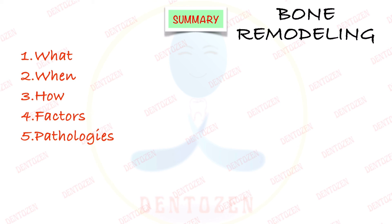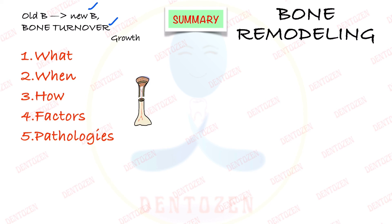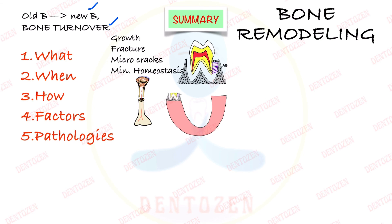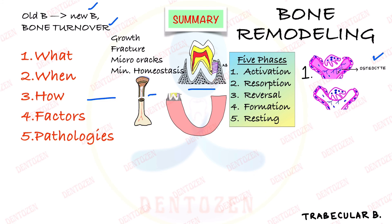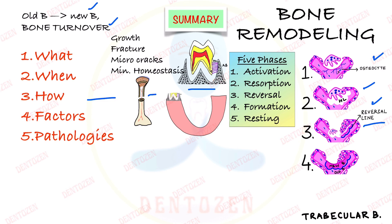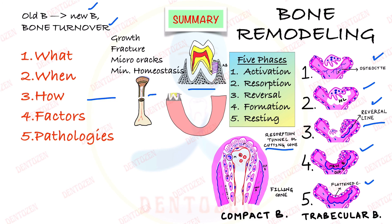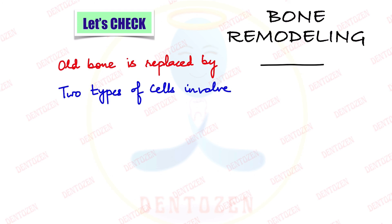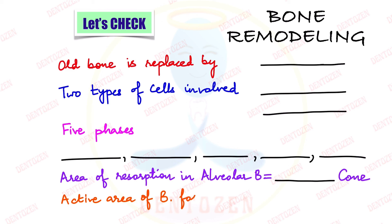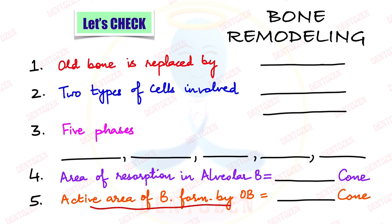In summary: bone remodeling is the replacement of old bone by new bone (bone turnover). It occurs during growth, after fractures, for repair of micro-cracks, and for mineral homeostasis, proceeding through five phases. In trabecular bone: activation by osteocyte signal, resorption by osteoclast, reversal by reversal cell, formation of new bone by osteoblast, and resting. In compact bone: a cutting cone (osteoclast resorption) and a filling cone (osteoblast formation) are seen, with a cement line between old and new bone. Factors are systemic and local, and many pathologies can result.